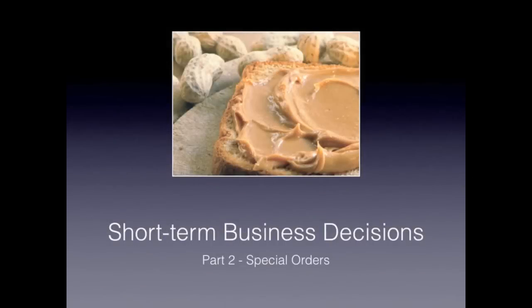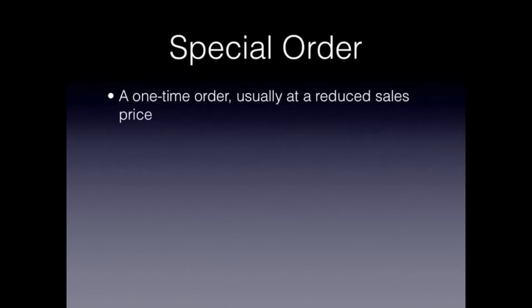This is part two in our management product and pricing decisions, or short-term business decisions series, and we're going to be talking about special orders. Special orders are one-time orders, and usually a reduced sales price is given on these special orders. There are a few things that management must think about when deciding whether or not to accept a special order.